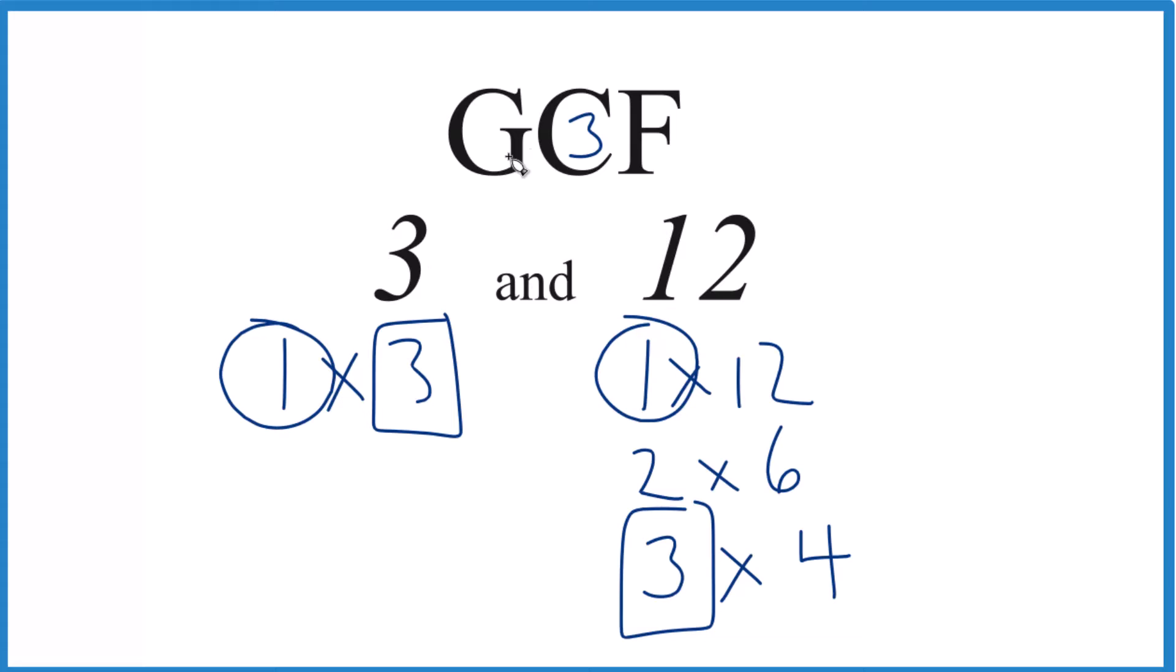This is Dr. B finding the GCF for 3 and 12. You could use another method like prime factorization, but unless it's kind of a big number, this works really well. Thanks for watching.